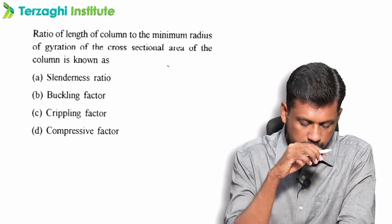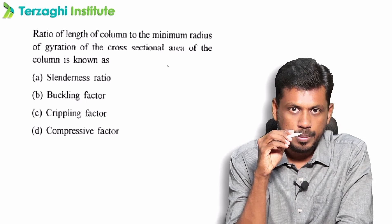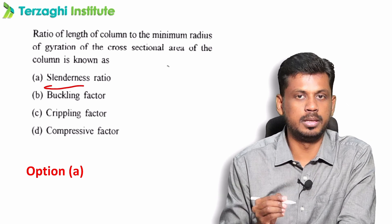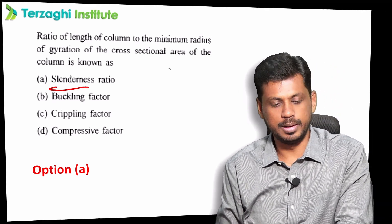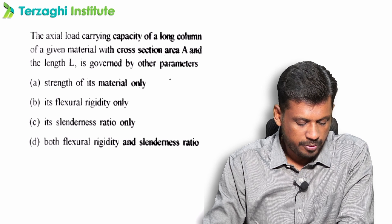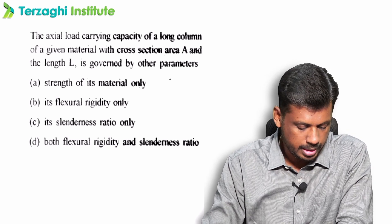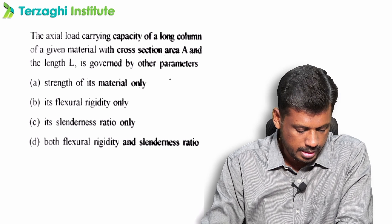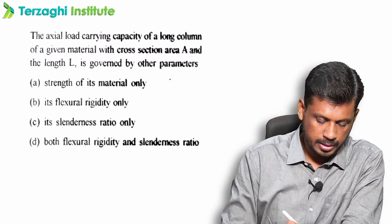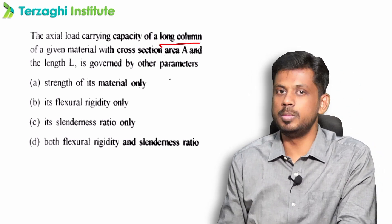Slenderness ratio: ratio of length of the column to the minimum radius of gyration, that is L by R minimum. The axial load carrying capacity of a long column of given material with cross-sectional area A and length L — long column load carrying capacity formula is pi squared E A by L squared.